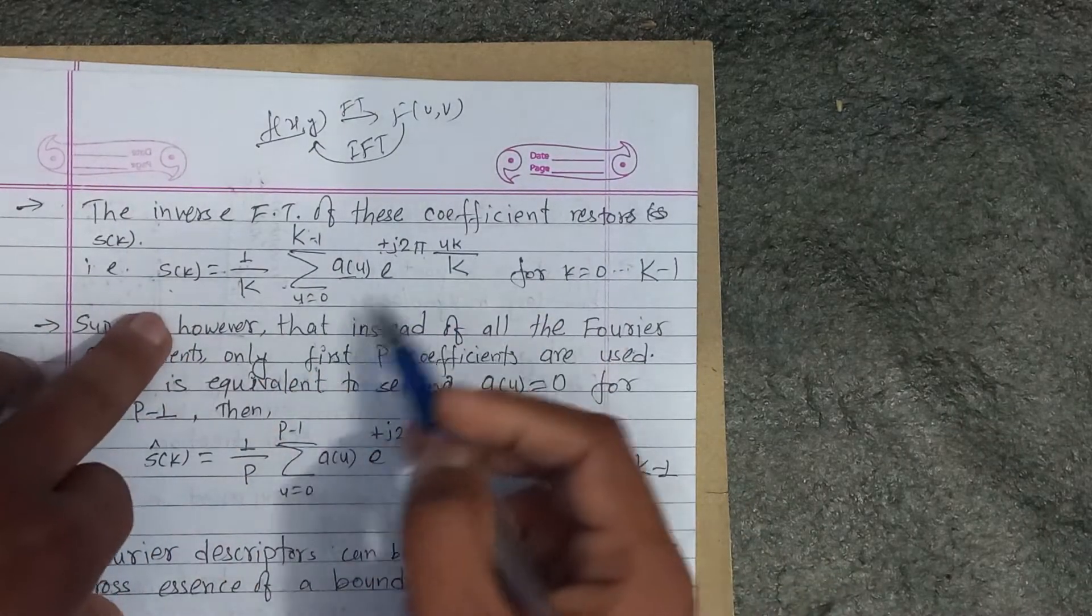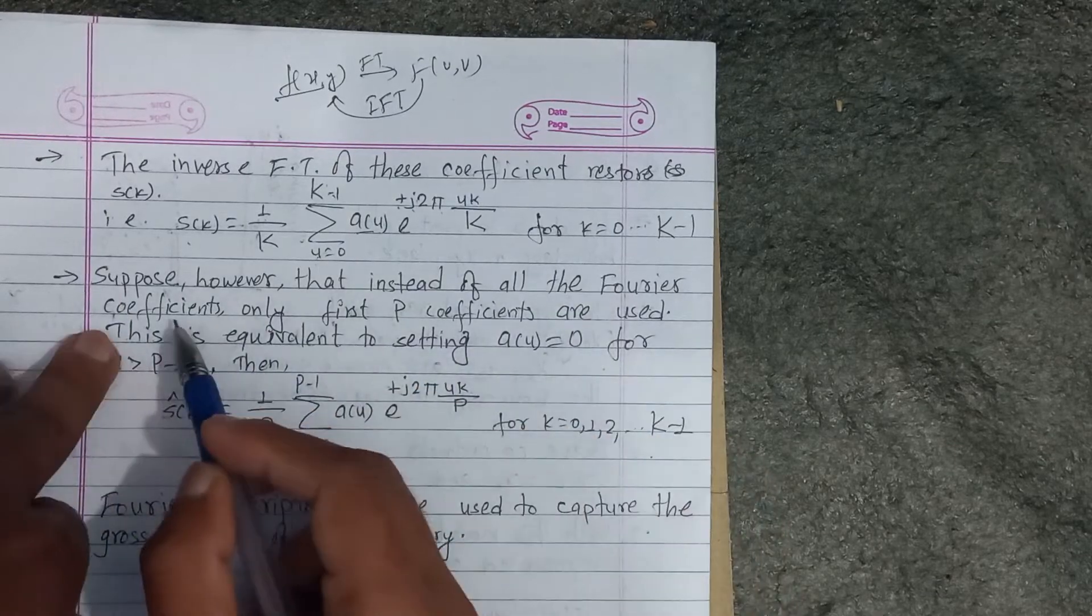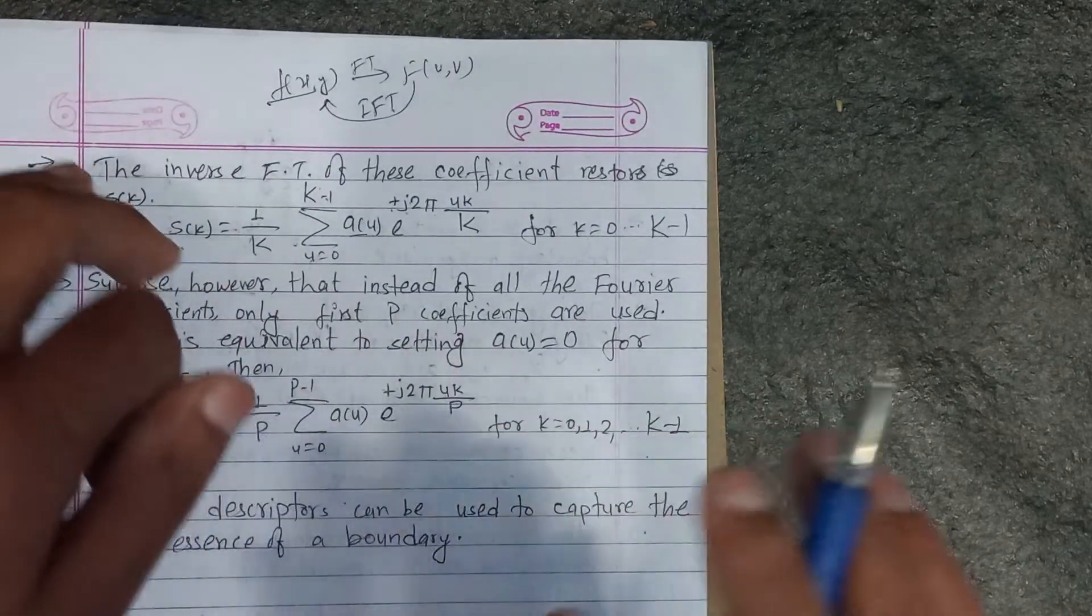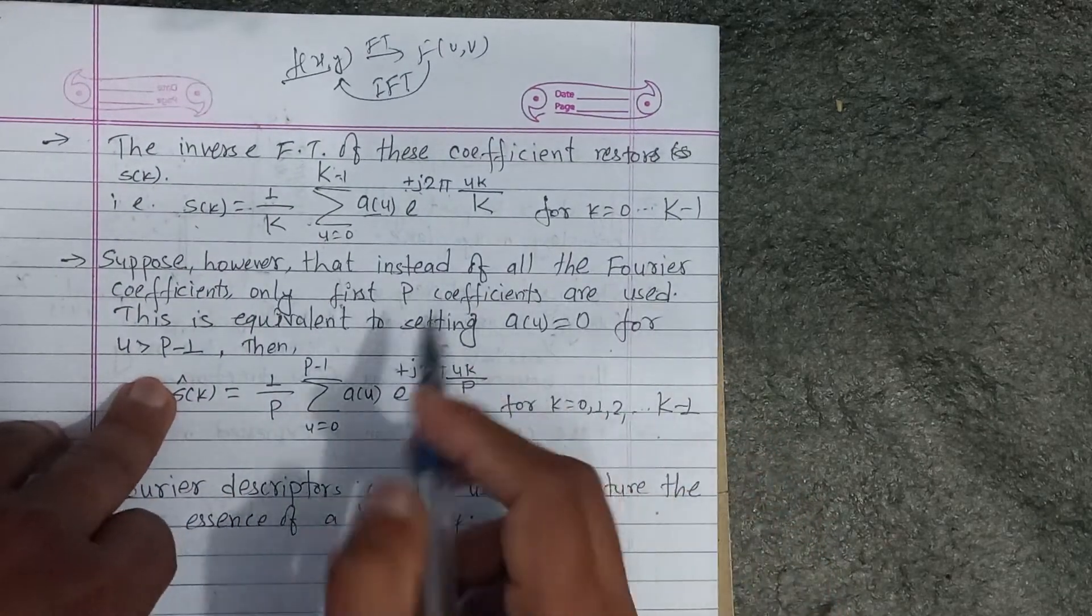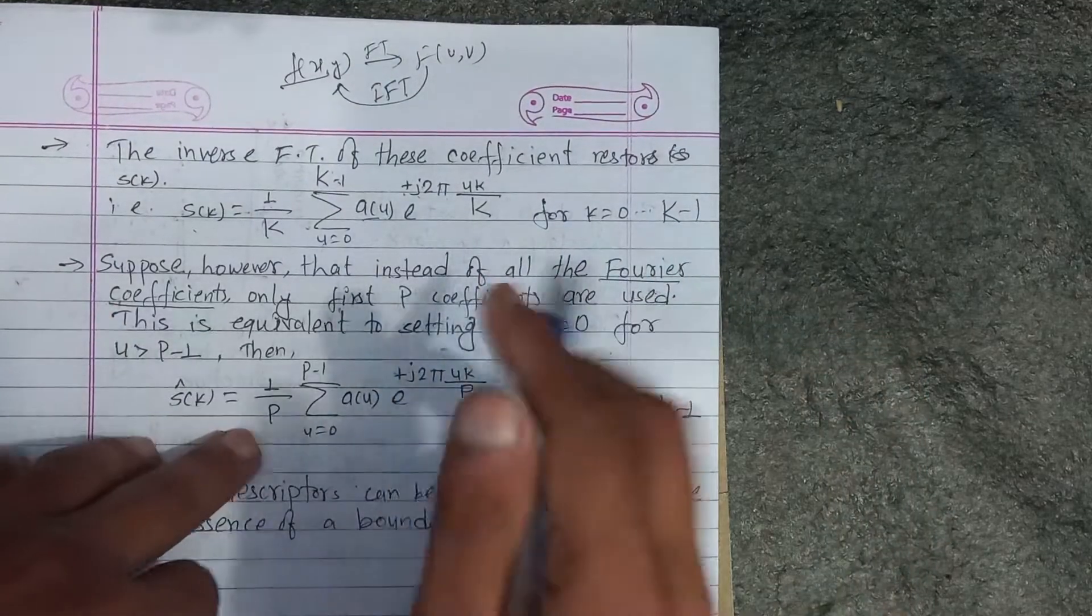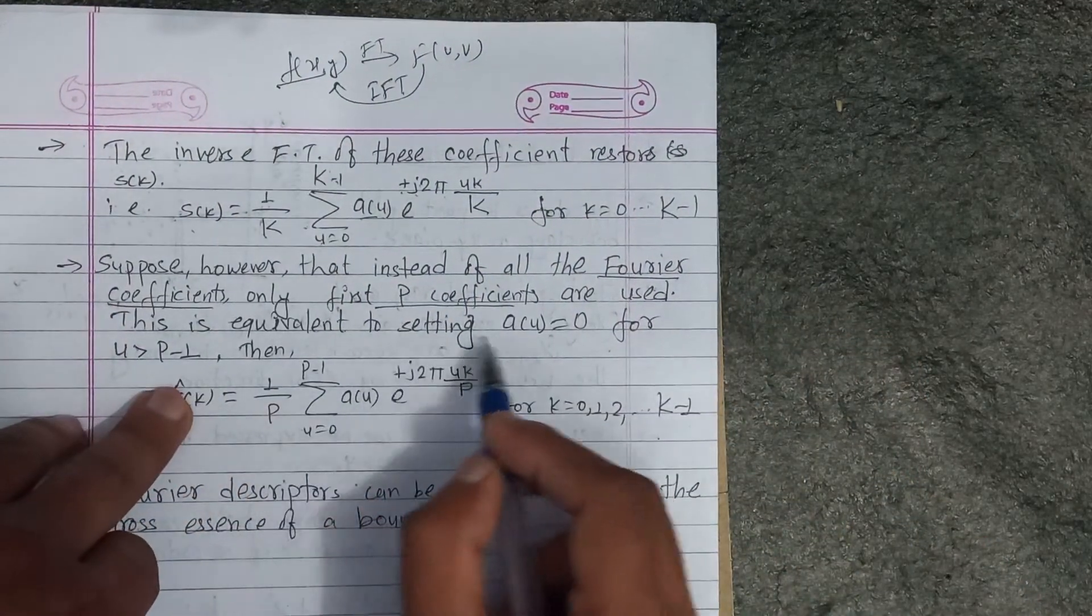Suppose, however, that instead of all the Fourier coefficients, only first p coefficients are used. Now we have to represent the boundary. It is the same Fourier coefficient, but using only the first p coefficients.